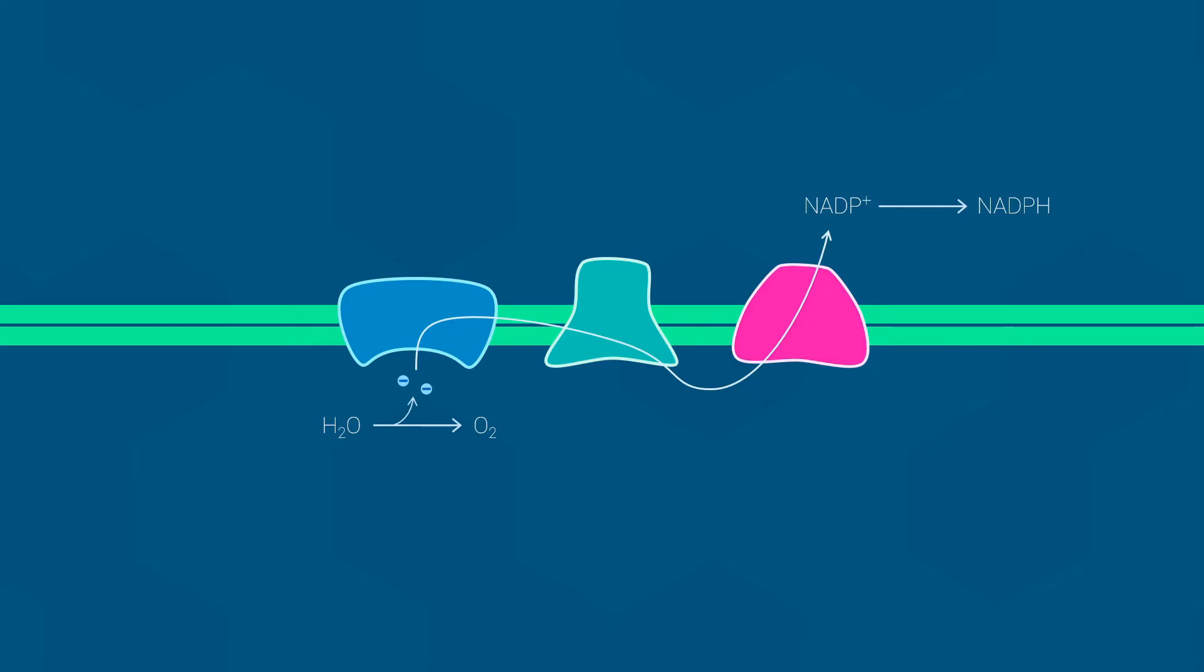But how does this happen? The electrons in water molecules have low potential energy, so how can they be used to reduce something with a more negative reduction potential?